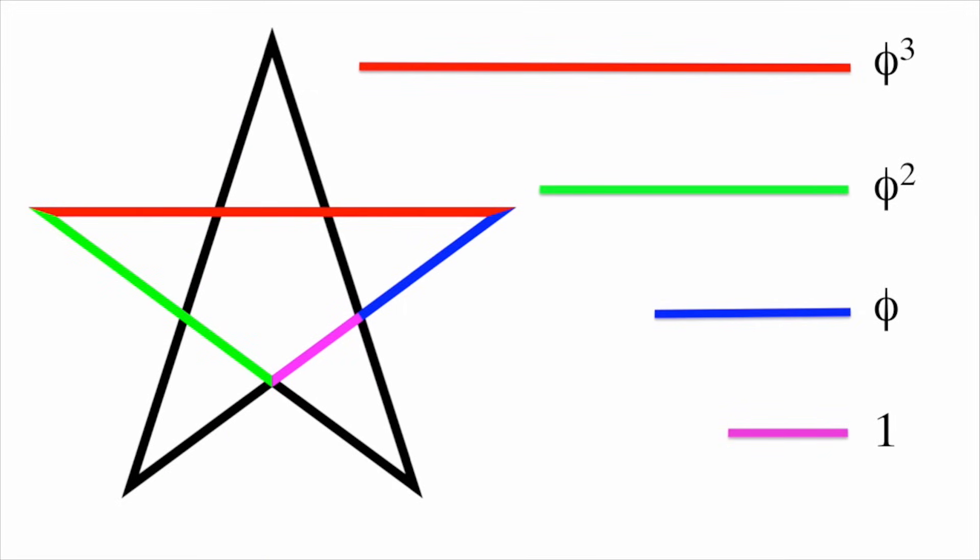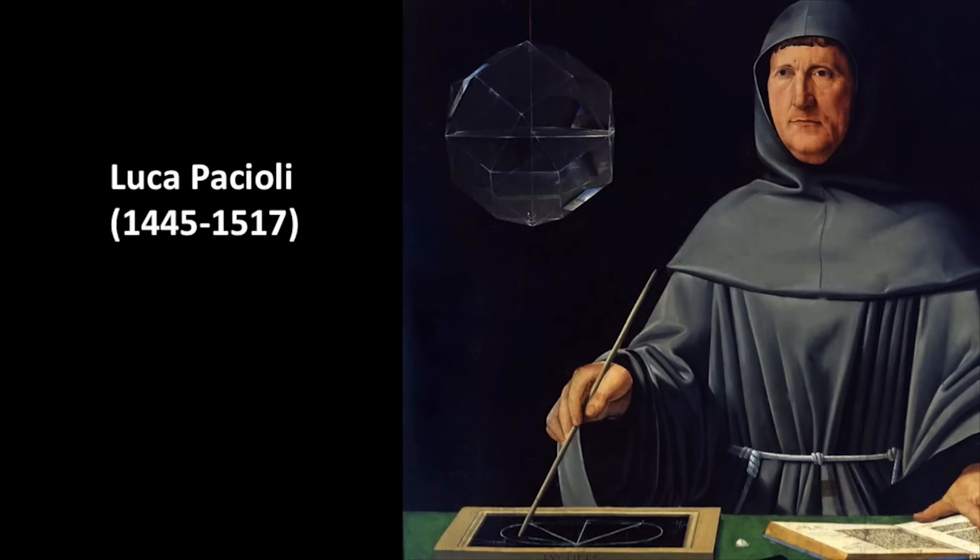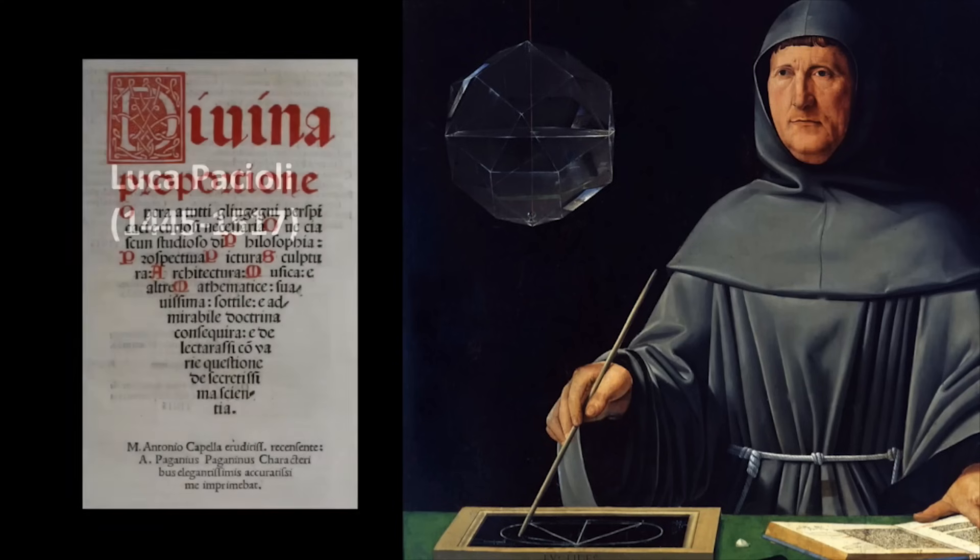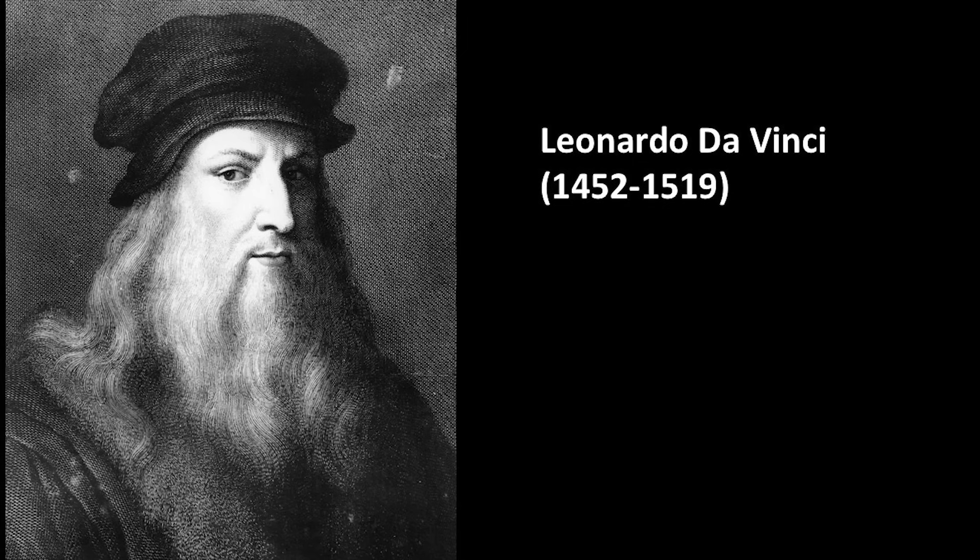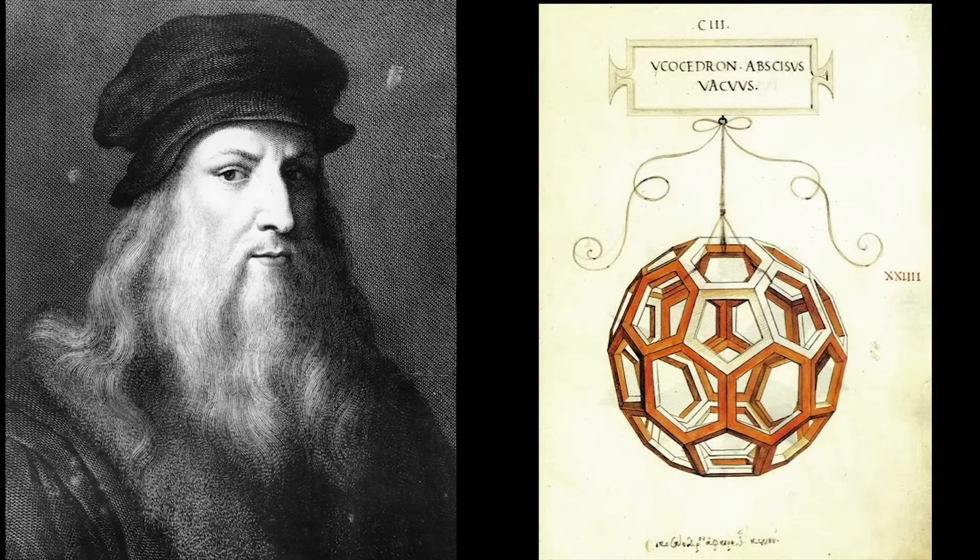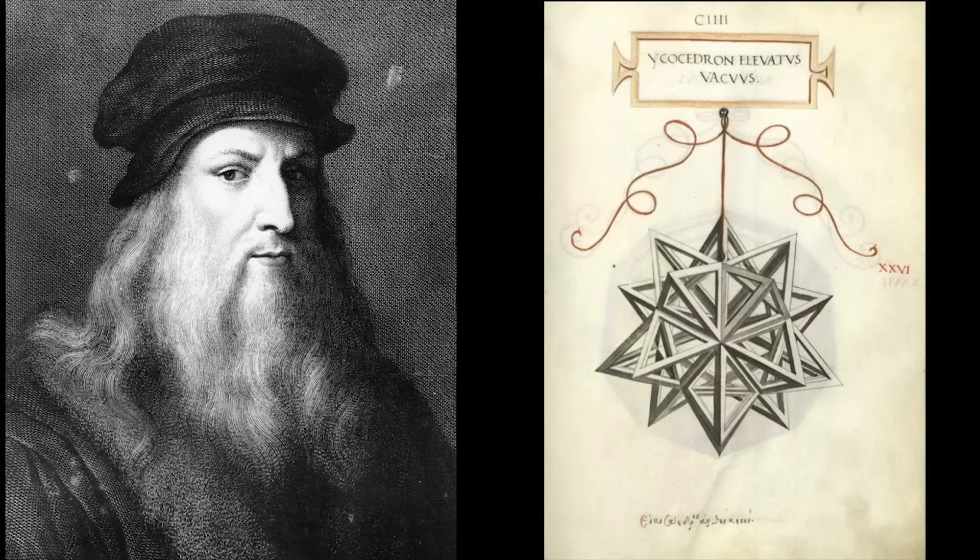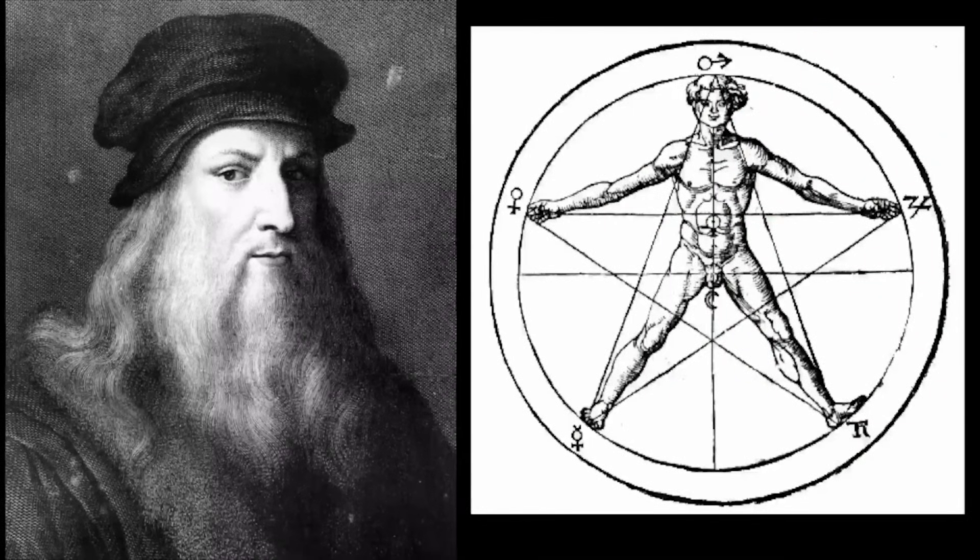Over 500 years ago, the Renaissance thinker Luca Pacioli was also bewitched by this ratio, so he wrote the book The Divine Proportion. Illustrated by his friend Leonardo da Vinci, the book studies various geometric solids and the golden ratio's appearance in architecture and the human body.